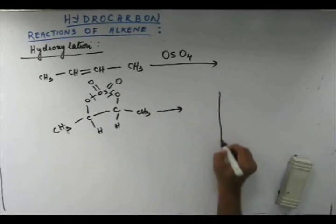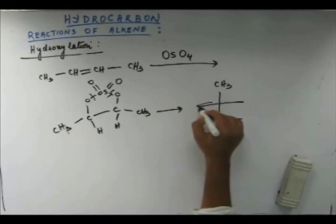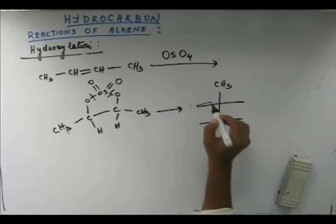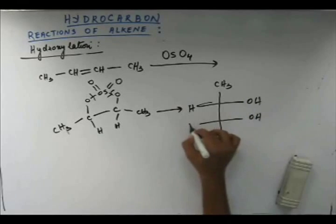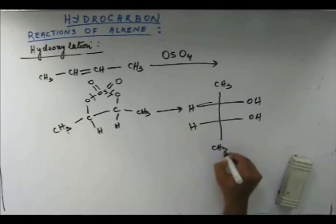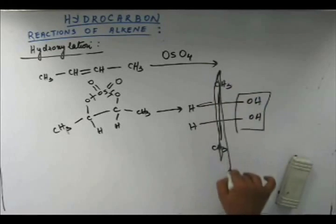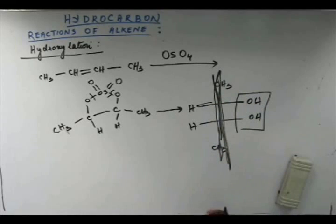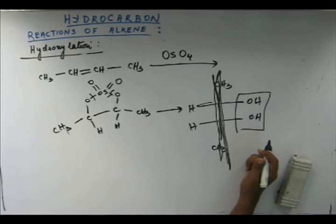So effectively, if I write it properly, we will get this. The two OH groups would be on the same side of the molecular plane, so this is how you would write or this is how it would be. We will get cis-hydroxylation, we will get cis-vicinal diol or we will get a glycol.